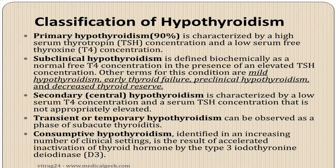Primary hypothyroidism accounts for almost 90% of cases, with decreased T3/T4 and elevated TSH due to a primary defect in the thyroid gland. In subclinical hypothyroidism, free T4 level is normal but TSH is slightly elevated. This is also called mild hypothyroidism, early thyroid failure, preclinical hypothyroidism, or decreased thyroid reserve.